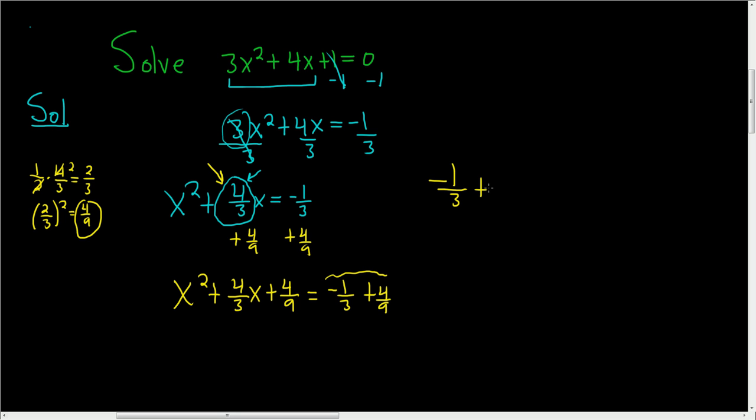We have negative 1 third plus 4 ninths. We can add the fractions when we have a common denominator. We can multiply the negative 1 third by 3 over 3. So 3 times negative 1 is negative 3, and 3 times 3 is 9. And then here we still have the 4 ninths. So this is 1 ninth.